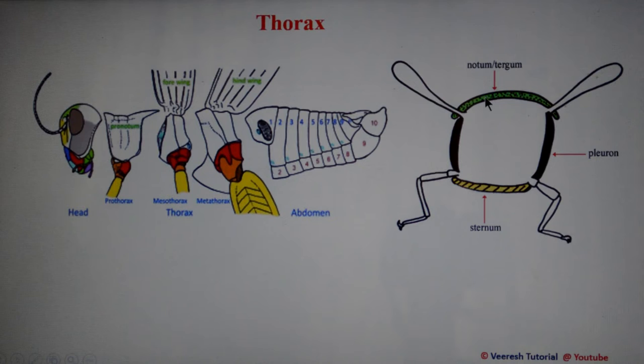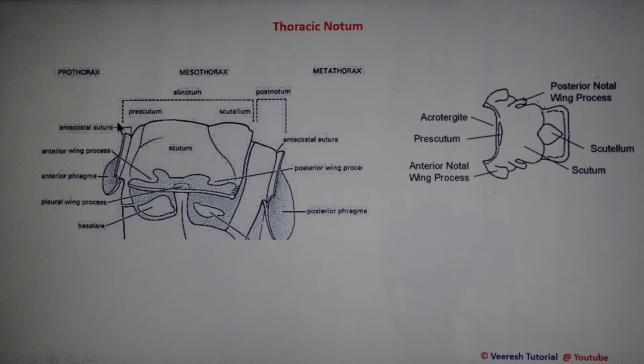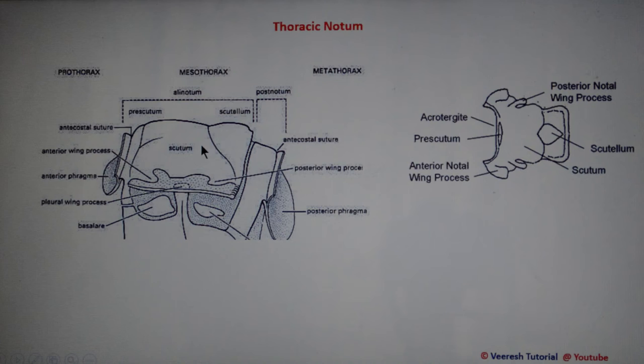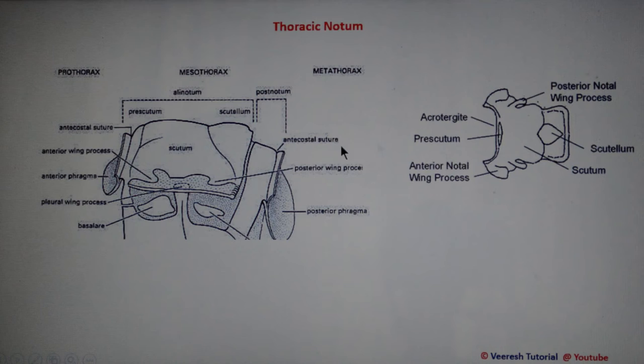The dorsal part of the thorax is called the notum or tergum, the lateral portion is the pleura, and the ventral portion is the sternum. The thoracic notum is divided into the anterior alinotum and posterior postnotum. The alinotum gives rise to the wing, whereas the postnotum gives rise to the internally inflected phragma. The pseudoscutellar suture divides the scutum and scutellum. The alinotum consists of anterior and posterior notal wing processes, which help in attachment of the wings at the dorsal side of the thorax.